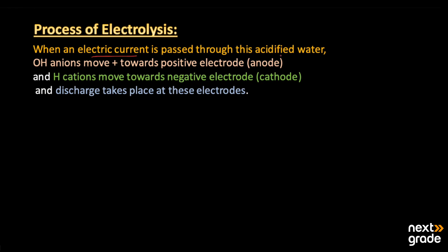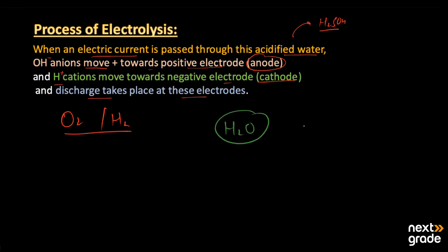In the electrolysis of water, when electric current is passed through acidified water — water that also contains an acid like H2SO4 — the hydroxide ions move towards the positive electrode, which is the anode, and hydrogen, being a cation, moves towards the negative electrode, which is the cathode. The water molecule, written as HOH, breaks up into its two ions: hydrogen positive (H⁺) and hydroxide ion (OH⁻).